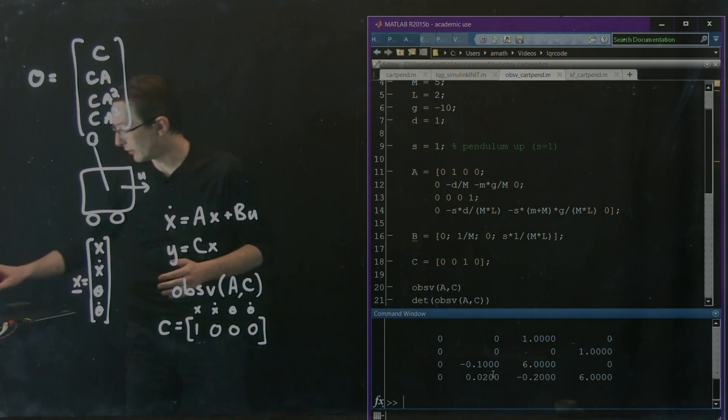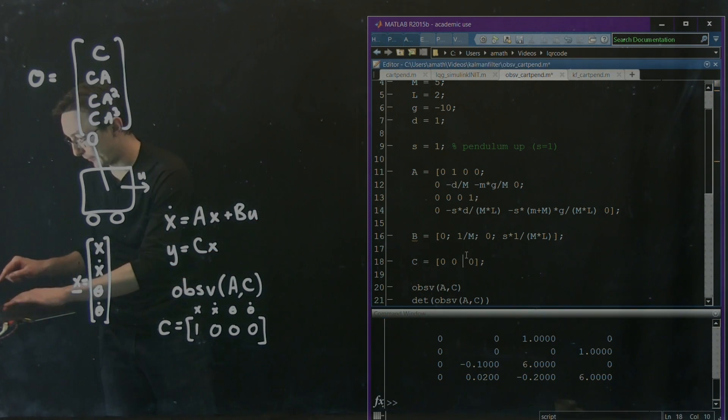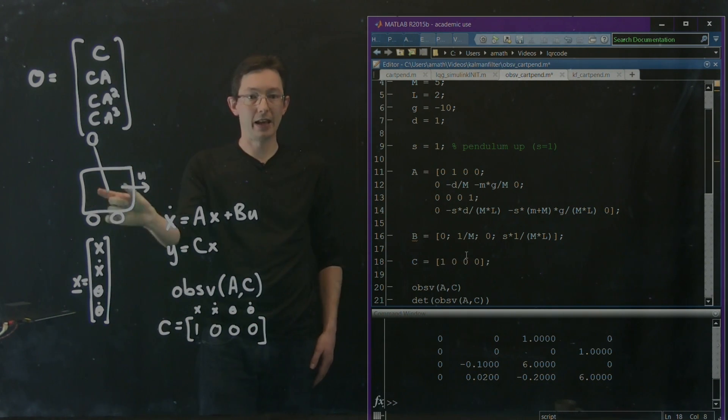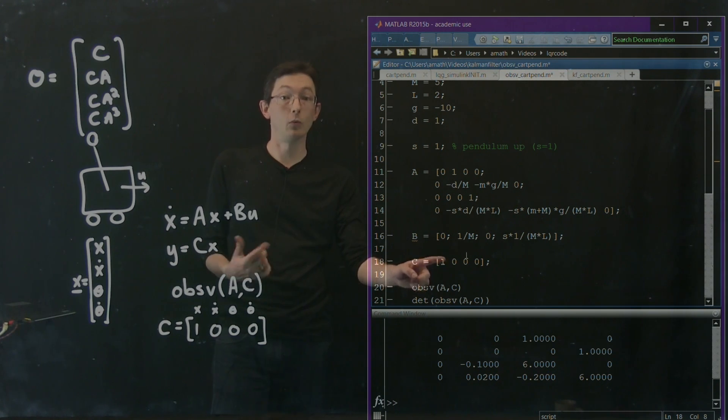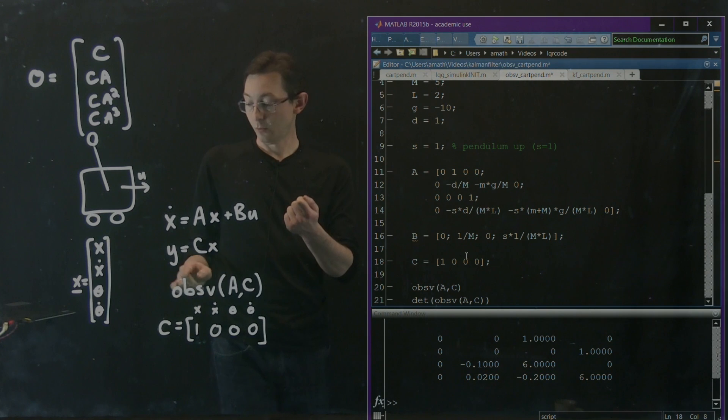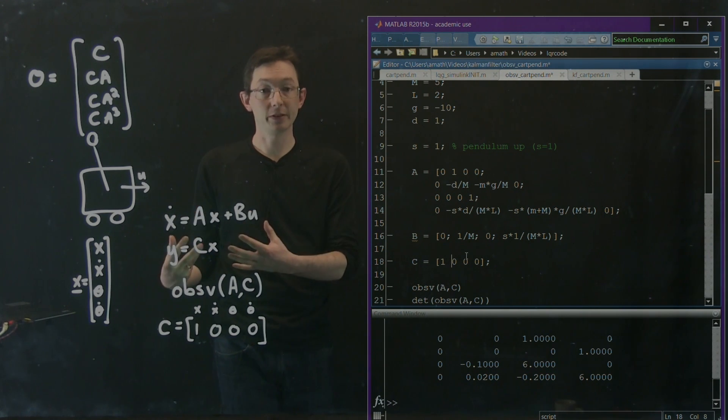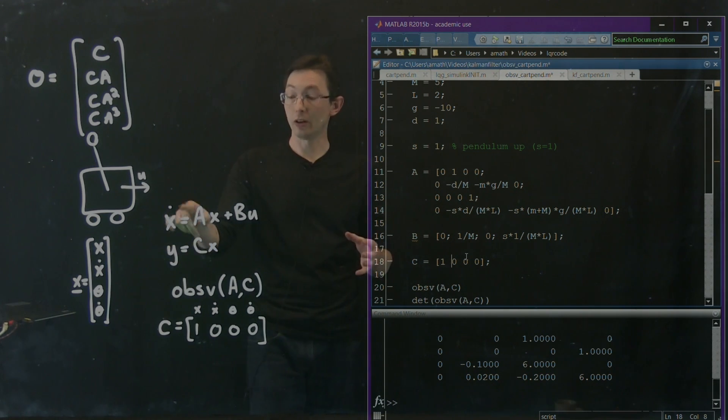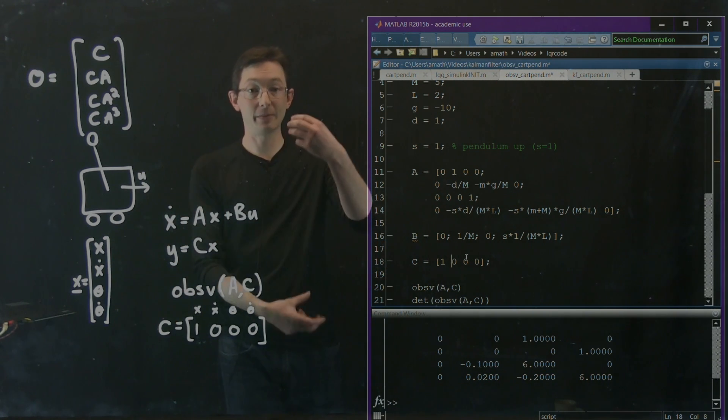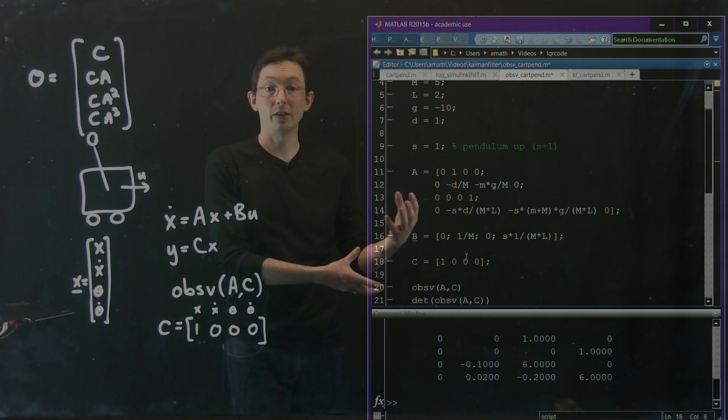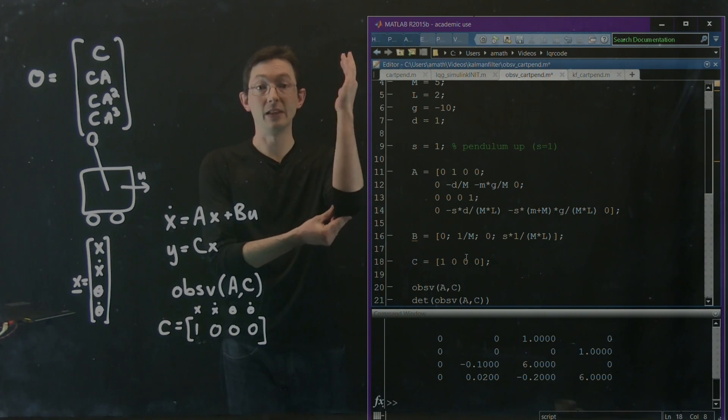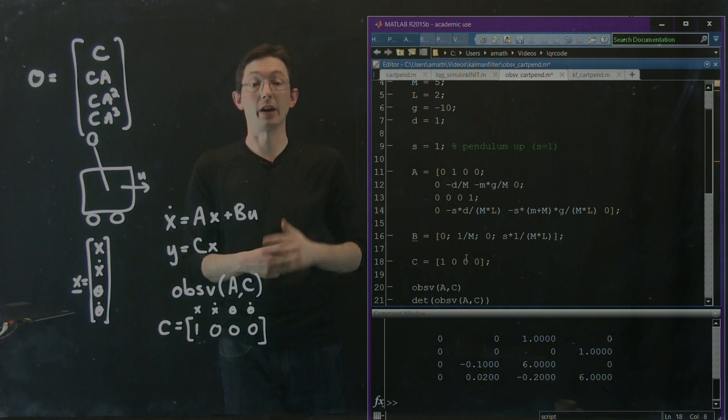So what we're going to do next time is go back and use this measurement of the cart's position X of t. We're going to use this measurement that was observable. Based on that single measurement Y, we're going to build a Kalman filter to estimate all of X, all of the state X at all times. Then we're going to use that estimated full state, again with LQR, to stabilize the system even with only one measurement. Thank you.